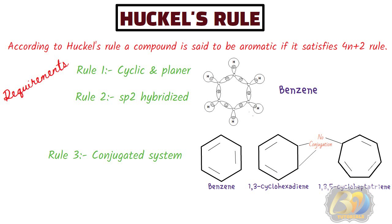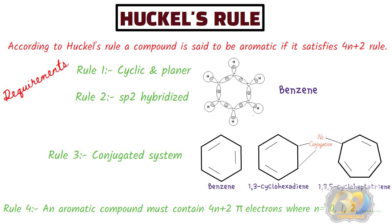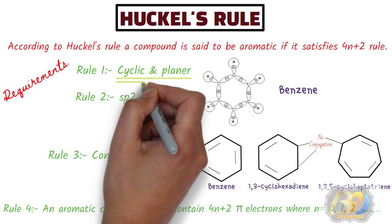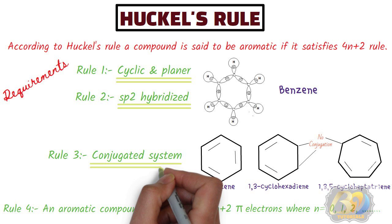Another meaning of conjugation is that the cyclic system must contain alternate single and double bonds. The last and most important condition is that the compound must contain 4n+2 pi electrons, where n is an integer: 0, 1, 2, 3, 4, etc. If the compound satisfies all these conditions — cyclic and planar, all ring atoms sp2 hybridized, cyclic system conjugated with alternate single and double bonds, and containing 4n+2 pi electrons — it is aromatic. Otherwise it is non-aromatic.